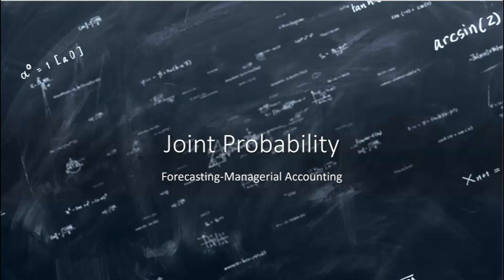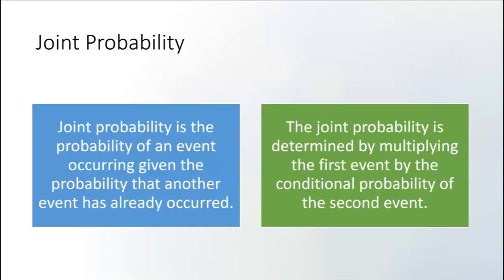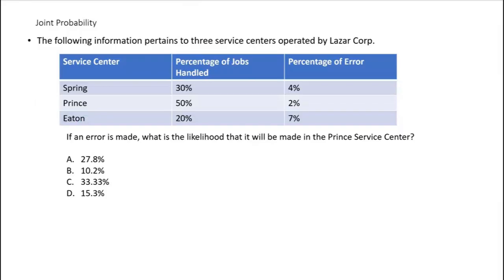Joint probability is the probability of an event occurring given the probability that another event has already occurred. The joint probability is determined by multiplying the first event by the conditional probability of the second event. So the question on the exam would look like this: the following information pertains to three service centers operated by Lazar Corp.